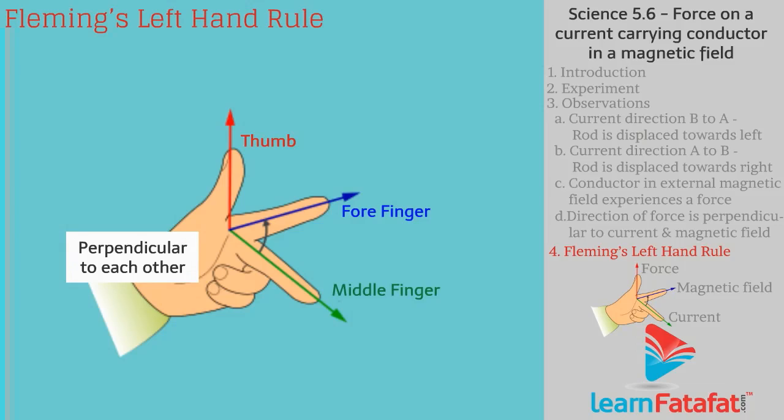If forefinger points in direction of magnetic field and middle finger in the direction of current, then thumb will point in the direction of the force acting on the conductor.